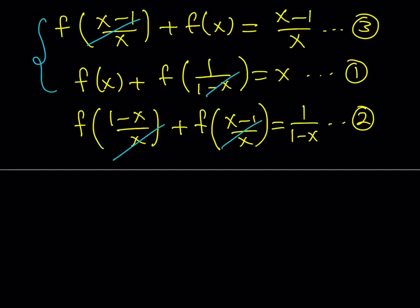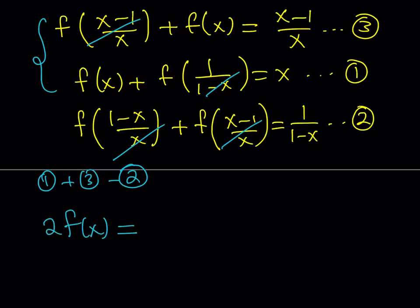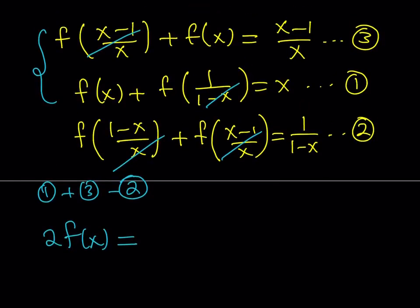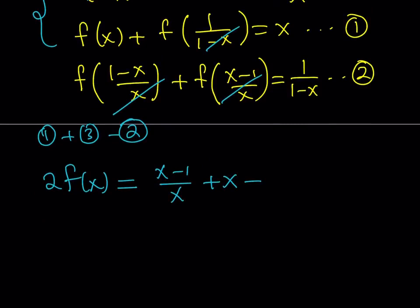Adding equations 1 and 3 and subtracting equation 2 will eliminate the unwanted terms, leaving 2·f(x) on the left-hand side. On the right-hand side, adding 1 and 3 gives (x-1)/x + x, and subtracting equation 2 gives minus 1/(1-x).